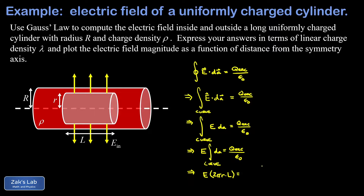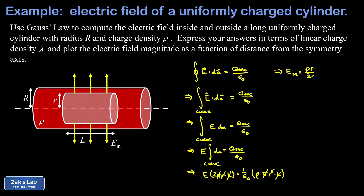Now we compute the enclosed charge. The enclosed charge is the volume charge density rho multiplied by the volume. Pulling 1 over epsilon zero out in front, we have rho times the volume of this cylinder — that's pi little r squared for the area times L for the length. The L's cancel out, one factor of r cancels, a pi cancels, and dividing both sides by 2 we find that the electric field inside the cylinder is given by rho r over 2 epsilon zero.